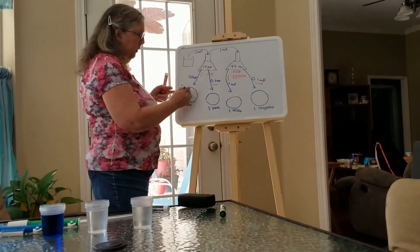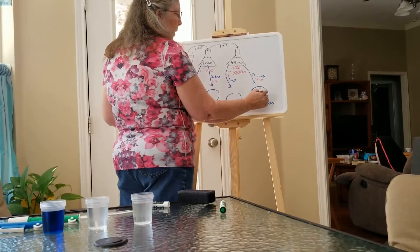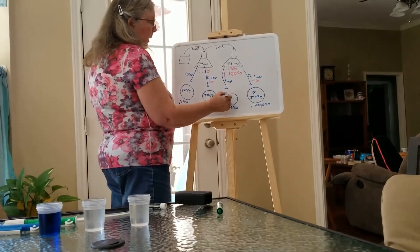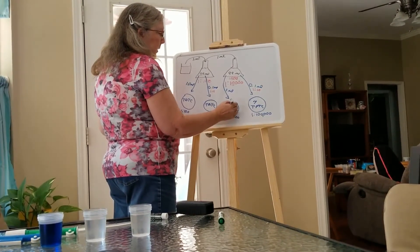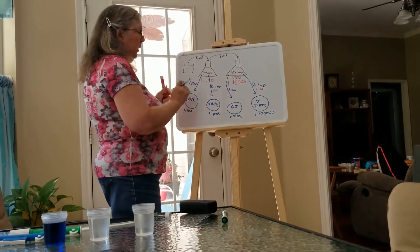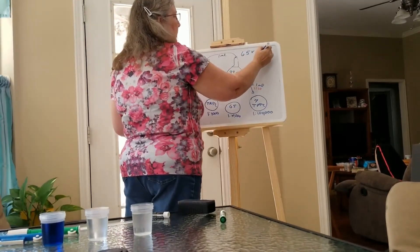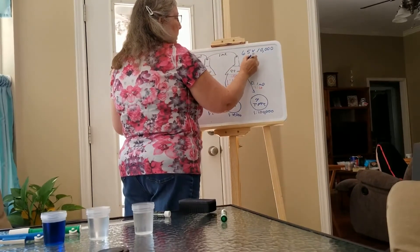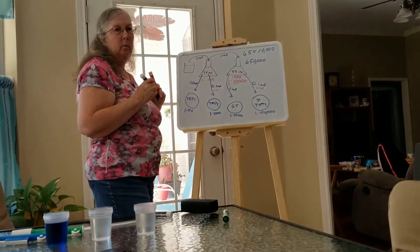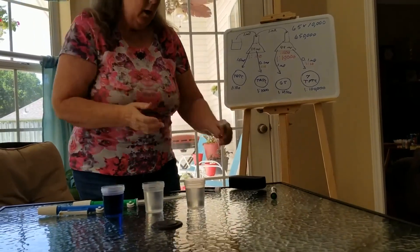If you have a lot of growth on a plate it may be too numerous to count, and if you have only seven colonies that's too few to count — ignore both. Let's say one plate has 65 colonies — that's the one you want. Ignore the others and use this one to determine the concentration. Take 65 times the dilution factor of ten thousand, and your answer is 650,000 bacteria per milliliter. That's why you wouldn't want to drink that water.